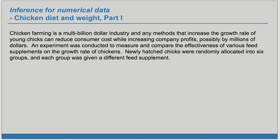Chicken farming is a multi-billion dollar industry and any methods that increase the growth rate of young chicks can reduce consumer costs while increasing company profits, possibly by millions of dollars. An experiment was conducted to measure and compare the effectiveness of various feed supplements on the growth rate of chickens. Newly hatched chicks were randomly allocated into six groups and each group was given a different feed supplement.